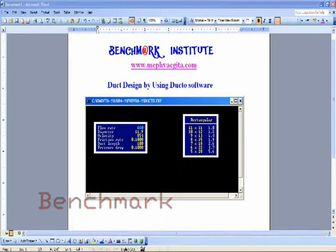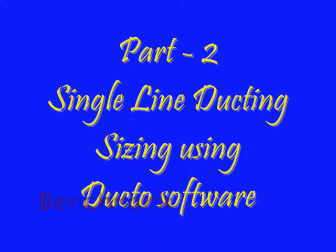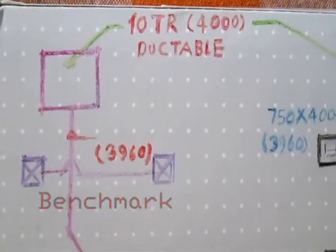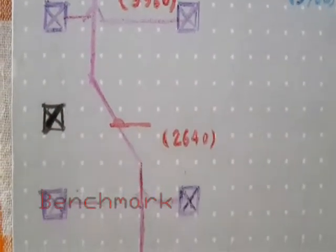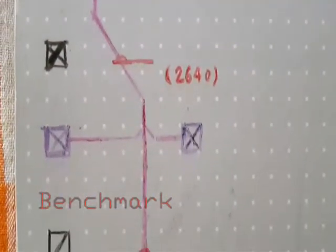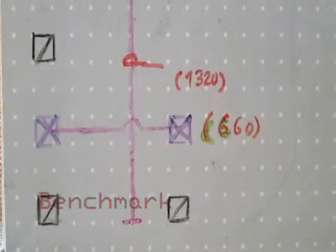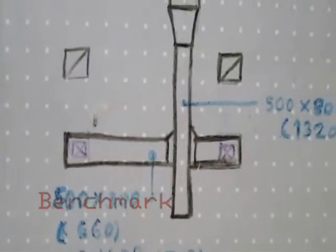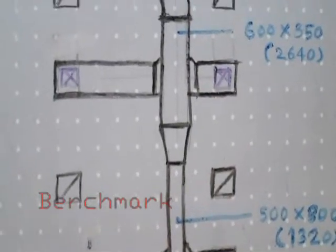When we start ducting design, we have to first make it in single line ducting, then convert it to double line after using the software or manual ductolator. We have to use minimum bends, elbows, and reducers, and keep ducting as straight as possible so that air can flow in a better direction.